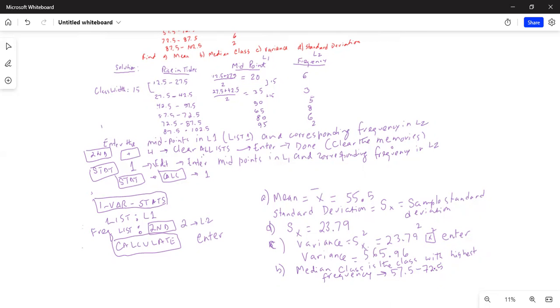You can also verify it by stat calc 1, list is L1, frequency list is L2, and you calculate. If you scroll down a little bit, you see median or Q2. Scroll down with the down arrow key to get the median as 65, which falls in the class between 57.5 and 72.5.